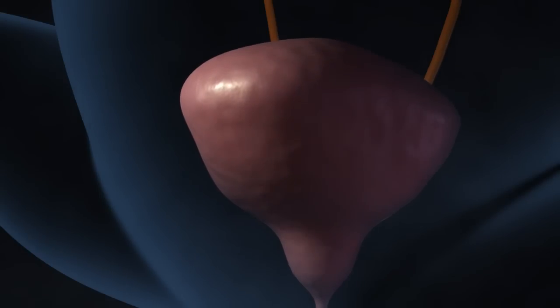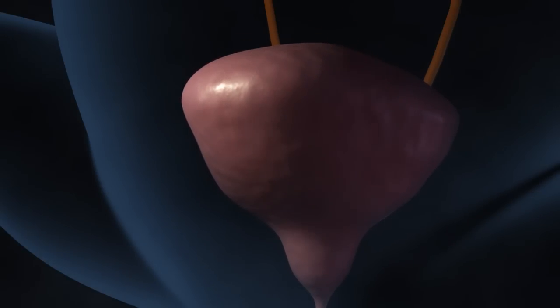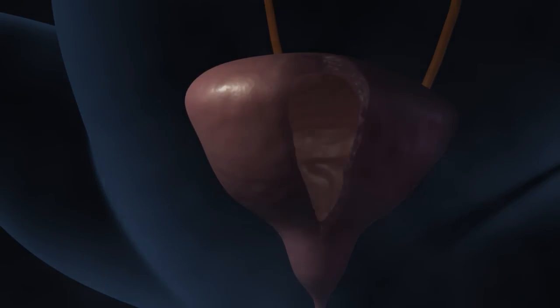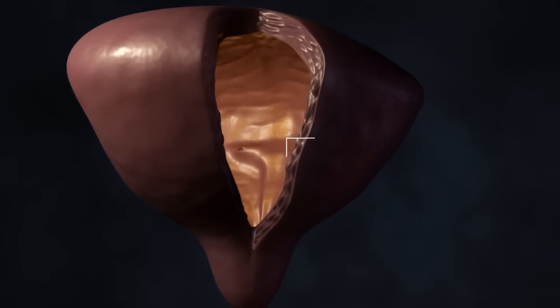The bladder is able to expand when filled with urine and to collapse to its original shape when emptied because of the interplay between the bladder's neuromuscular activity and the elastic nature of its wall.